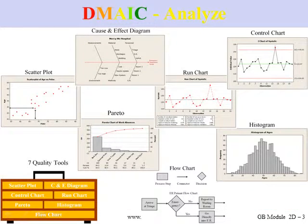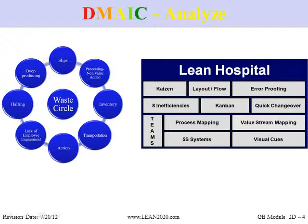One group of tools that you will have already been exposed to as a yellow belt will be the 7 quality tools that you will see as part of the process control day. You've also seen tools associated with LEAN — those are the tools from the four modules discussed as part of the LEAN day. We reviewed the DOWNTIME or hospital acronym and a number of different LEAN tools as part of the house of LEAN. Those tools are also ones you'll be utilizing during the analyze and improve stages.